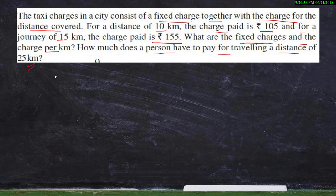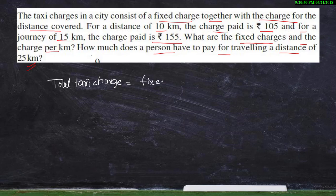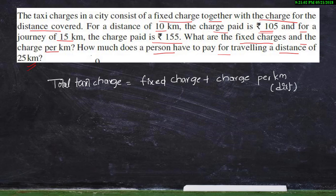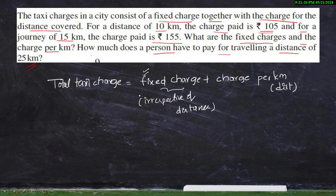The total taxi charge is divided as: fixed charge plus charge per kilometer, or charge per distance covered. This fixed charge is irrespective of distance — that means once you step into the taxi, even though you didn't travel any distance, you still have to pay this charge.